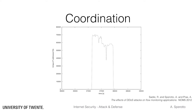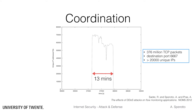On the x-axis we have time, while on the y-axis we have the number of unique IP addresses that were involved in the attack. The attack lasted roughly 13 minutes, and during this time more than 376 million TCP packets against port 6667 were sent. More than 20,000 unique IP addresses, which with some approximation we can associate with 20,000 unique hosts, took part in the attack.